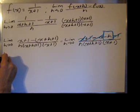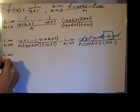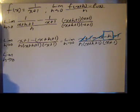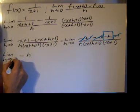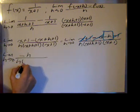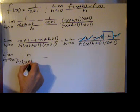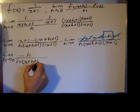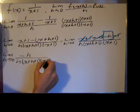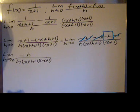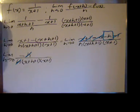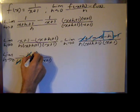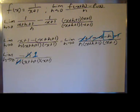So we have the limit as h approaches 0 of negative h divided by h times x plus h plus 1 times x plus 1. Notice the h's now cancel — a 1 is not left, a 0 is not left. I've seen that mistake before, that's why I mention it.